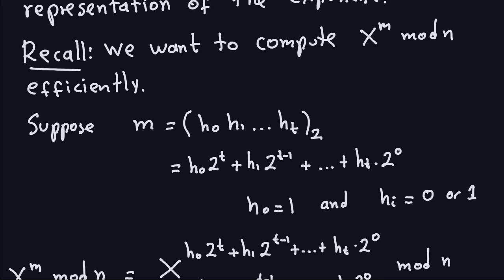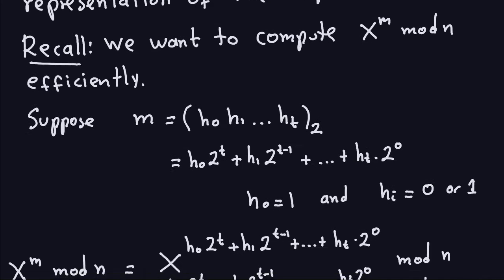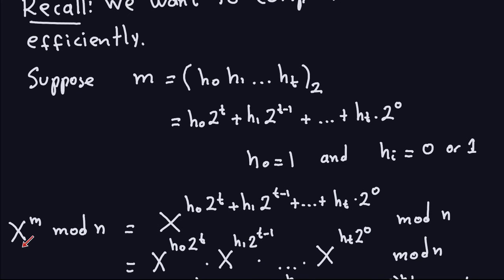We're going to use a little bit of algebra here — laws of exponents, which are also true when you take the modulus. So I want to compute x to the m modulo n. I'm going to replace m by its binary representation, so I get x raised to that binary expansion, all modulo n.